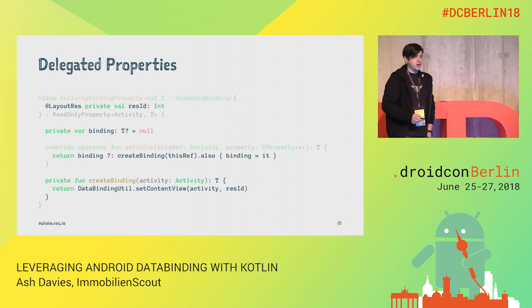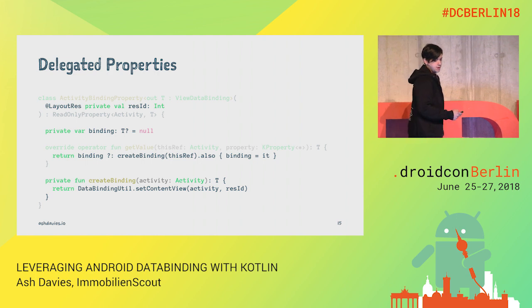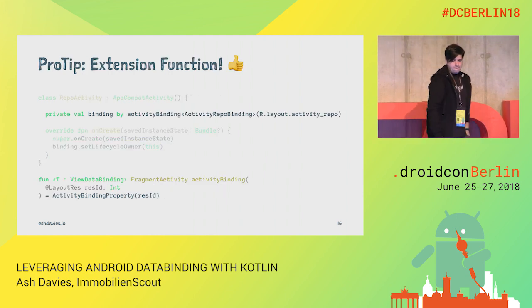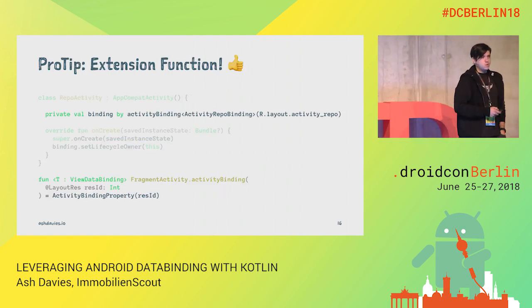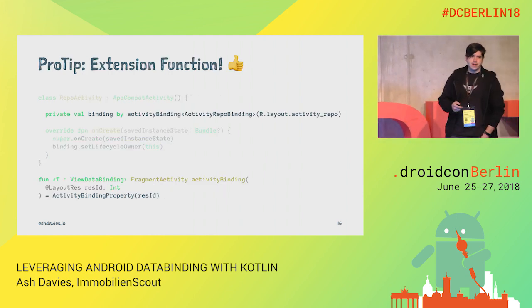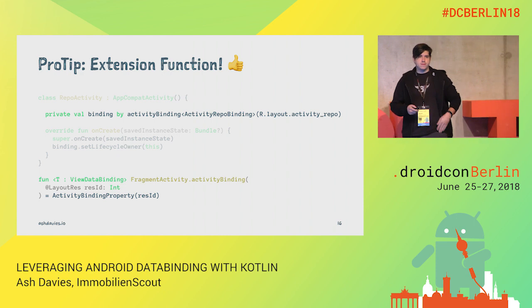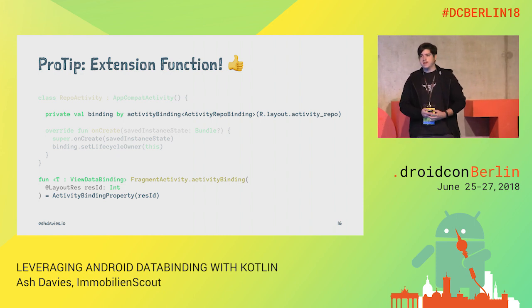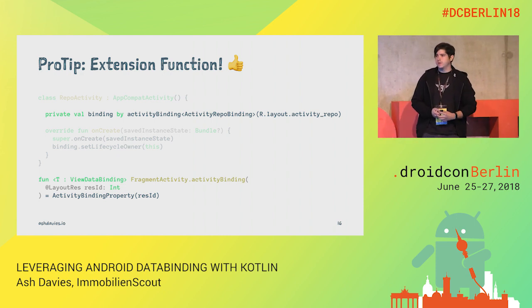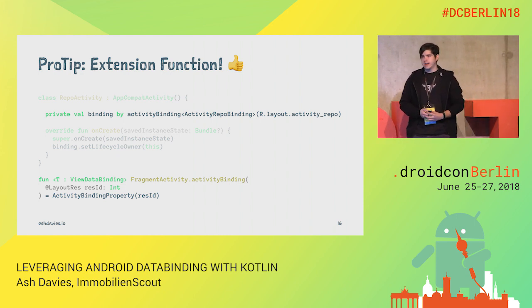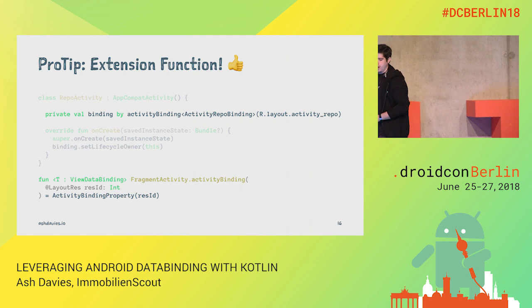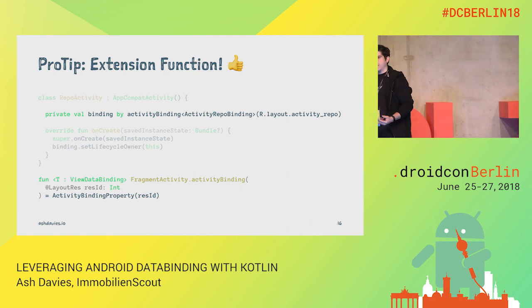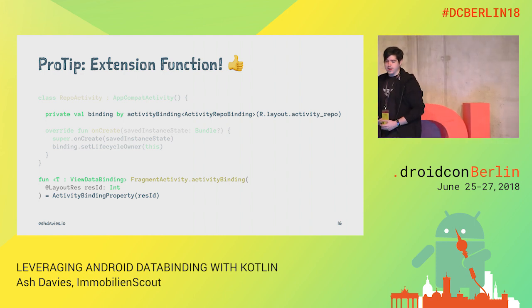In our activity, we can use an extension function to access our delegated property. This is consistent with how we do so with a lot of other Kotlin delegated properties, like lazy or observable, so that it looks quite nice and consistent in our code.